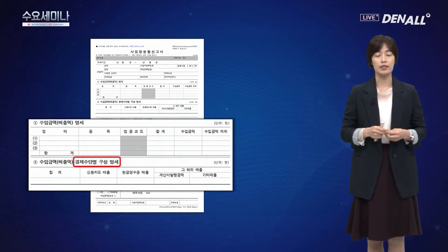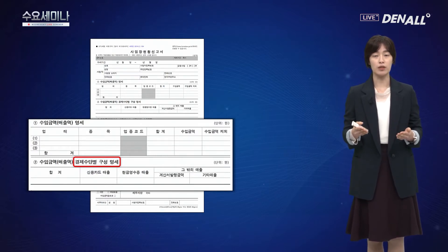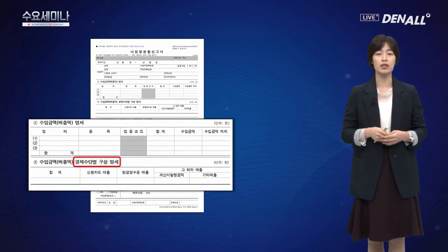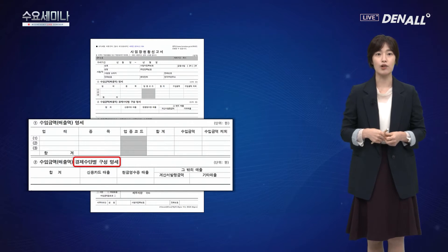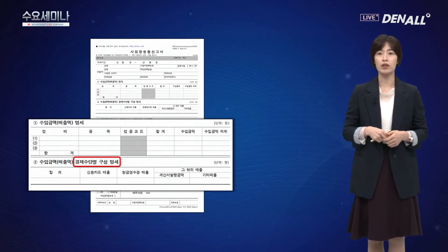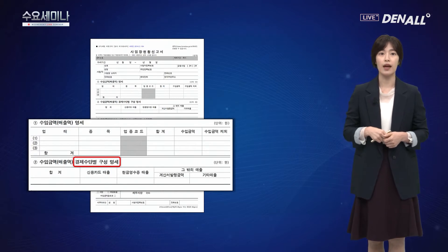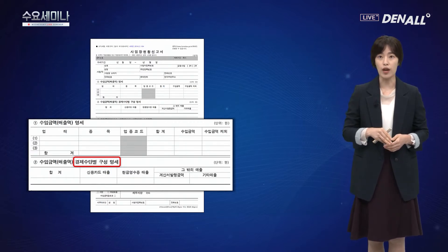매년 2월이 되면 사업장 현황신고를 하면서 종이만 덜렁 직원분들이 받게 되는 거죠. 1년에 한 번씩 하다 보니까 기억이 잘 안 납니다. 사업장 현황신고서가 어떻게 구성되어 있는지 기억해 두셨다가, 매년 2월이 되면 이 내용을 적어야겠구나 라는 것을 기억해 두시면 훨씬 좋겠습니다.